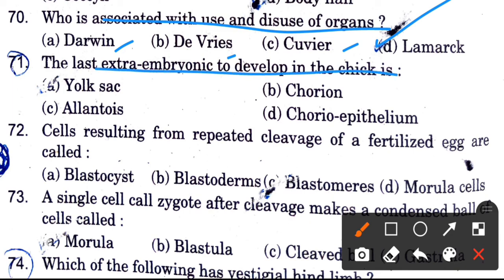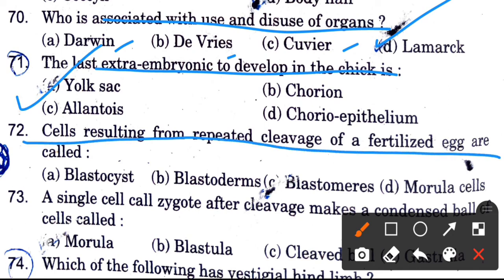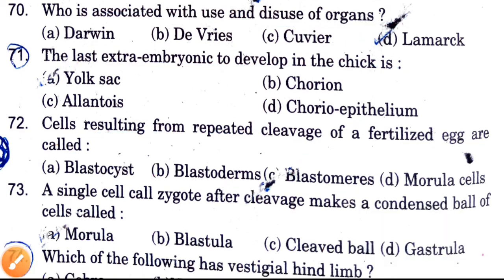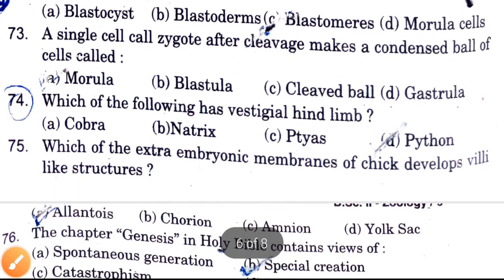The last extra-embryonic membrane to develop in the chick is — options are yolk sac, chorion, allantois, and chorio-epithelium. The answer is yolk sac. Cells resulting from repeated cleavage of fertilized egg are called — options are blastocyst, blastoderms, blastomeres, and morula. The answer is blastomeres.